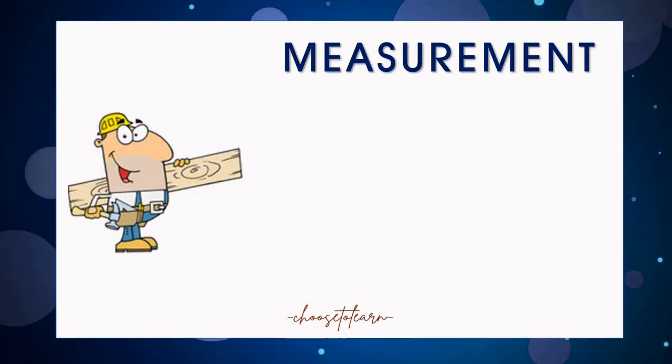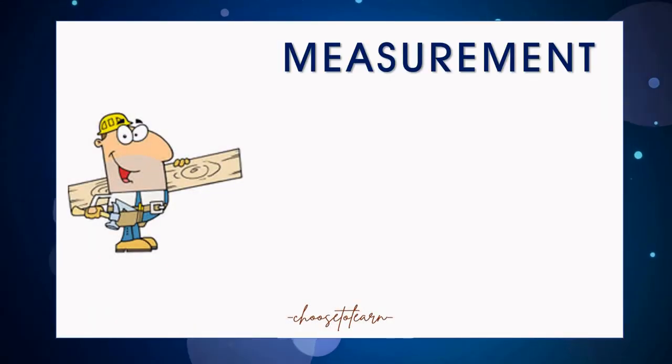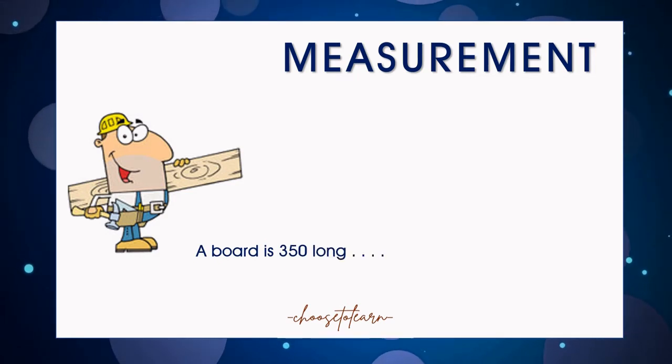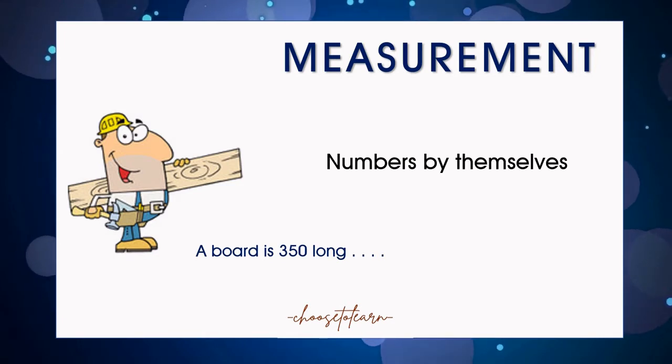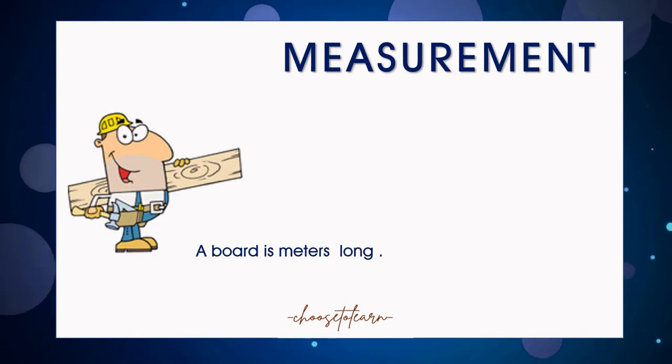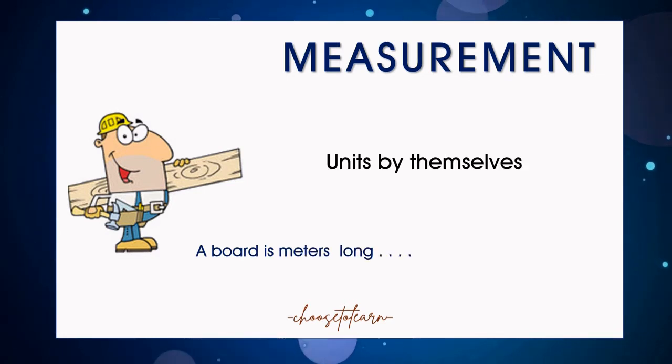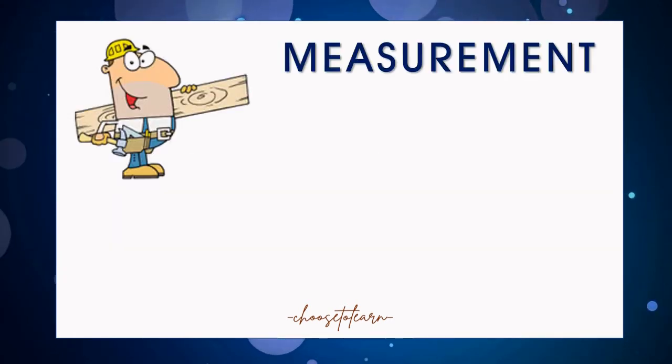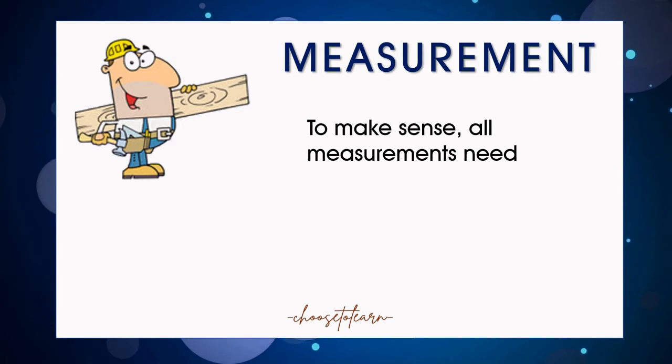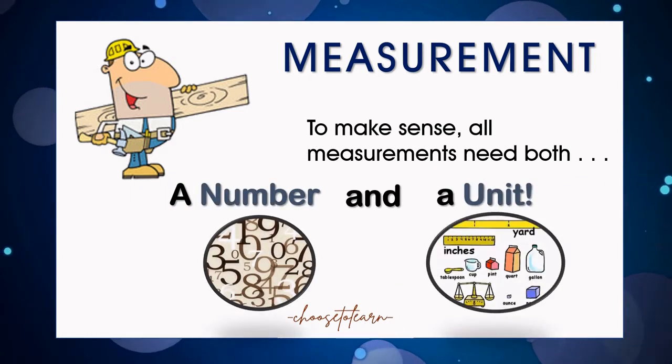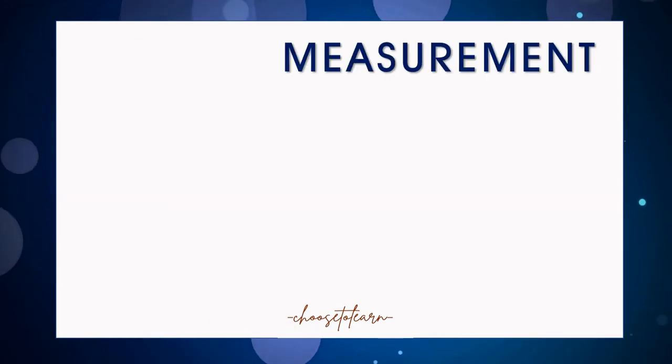Suppose we wanted to measure the length of the board. So we say a board is 350 long. But numbers by themselves don't make sense. And when we say a board is meters long, units by themselves don't make sense. To make sense, all measurements need both a number and a unit. Measurement is simply a process of comparison.